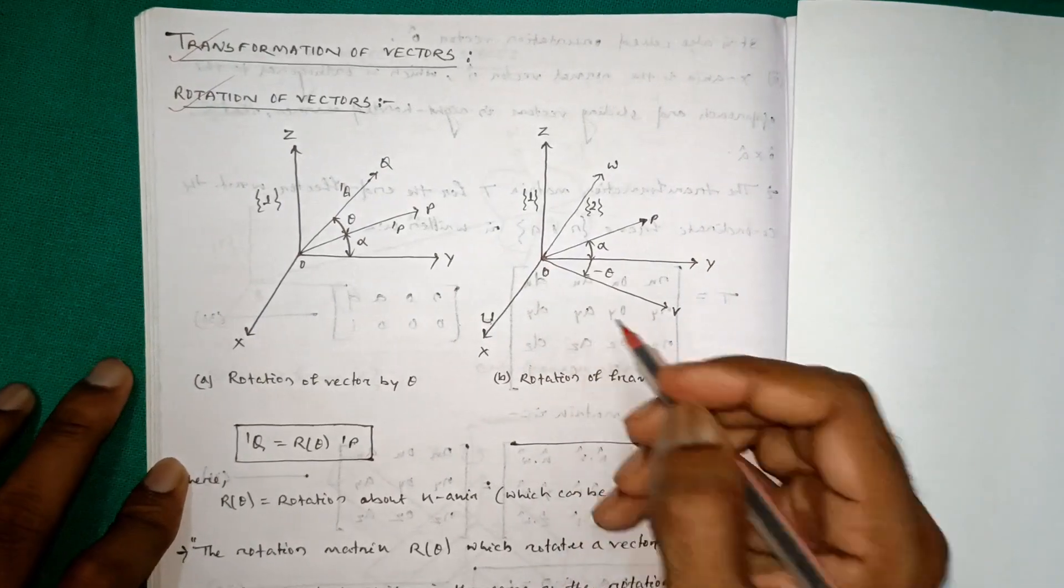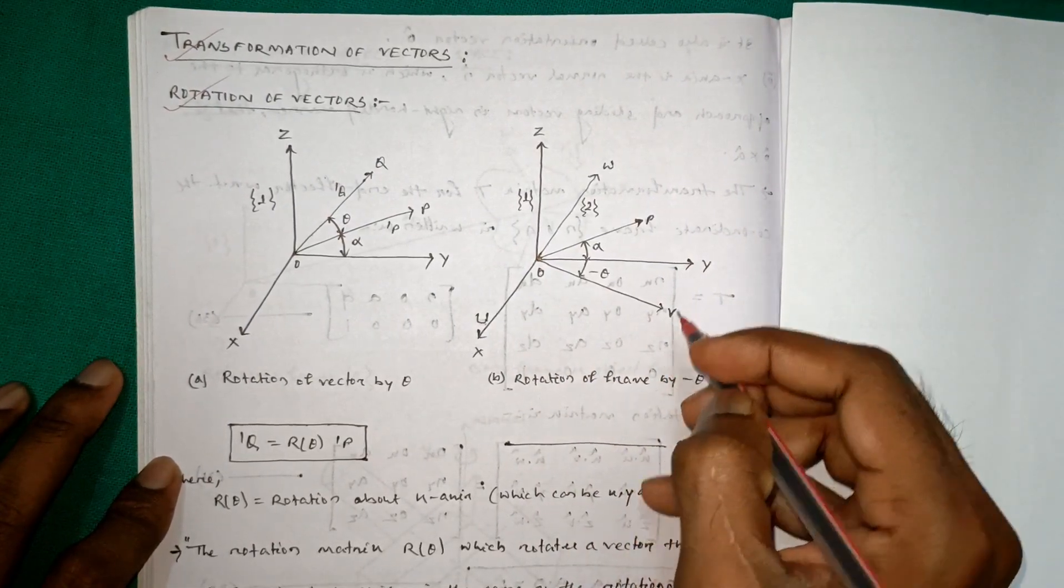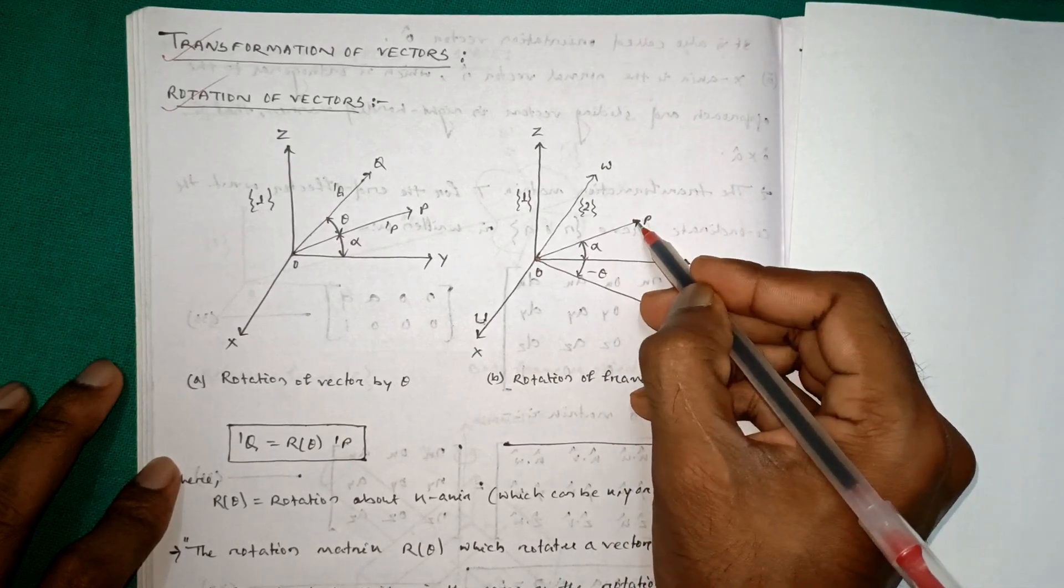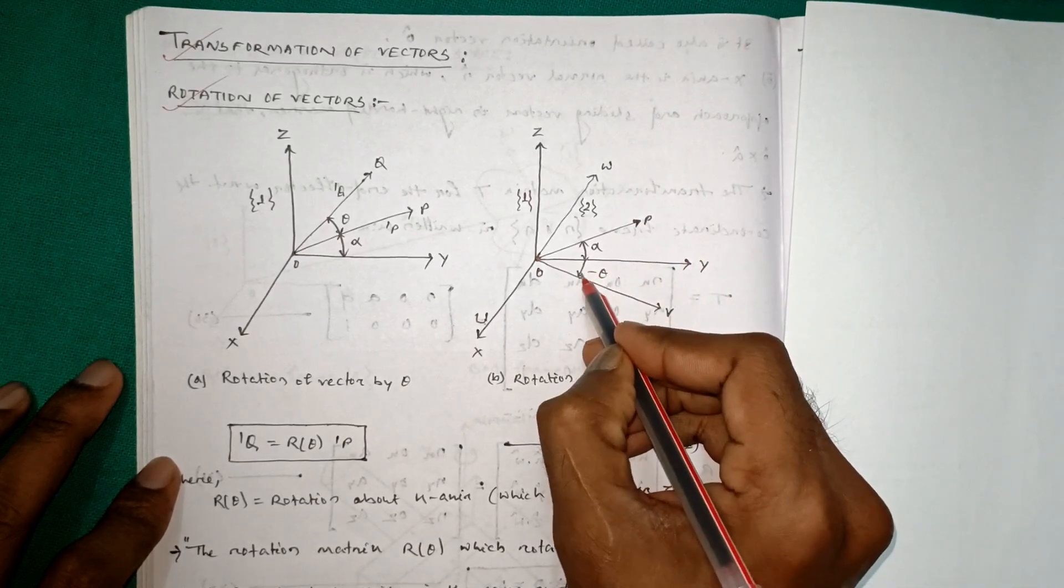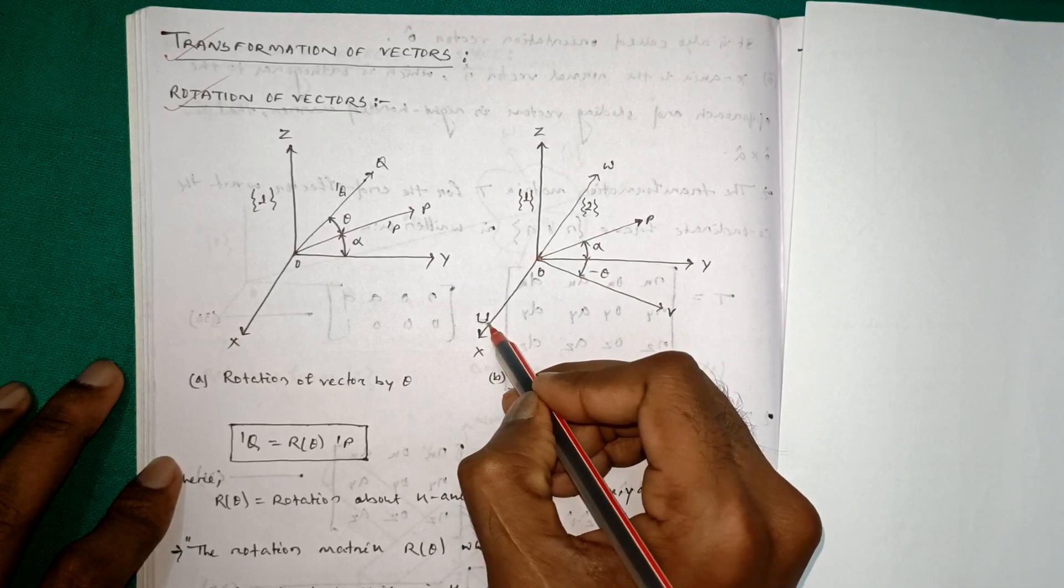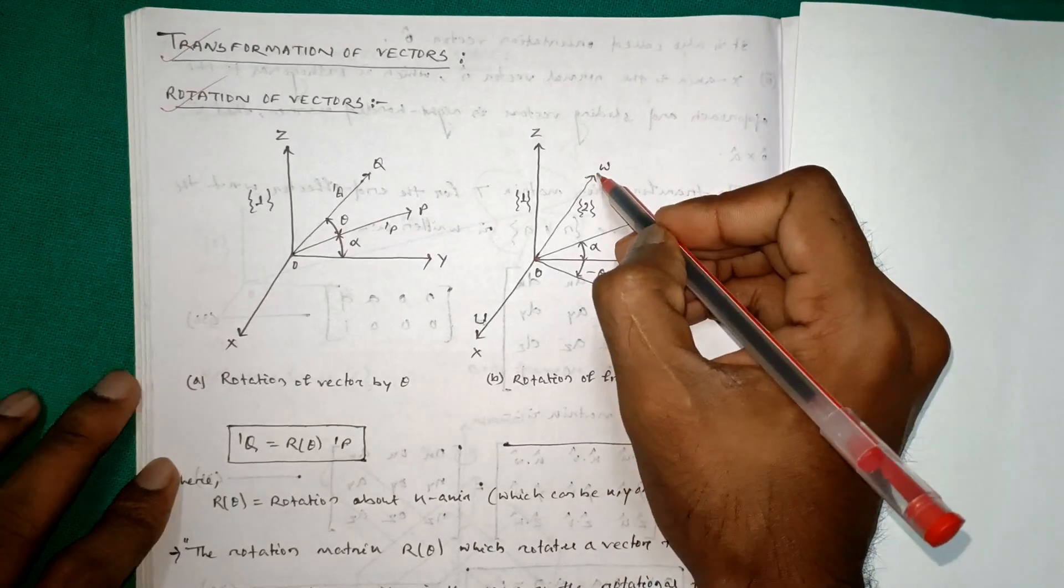Here we can see the rotation of frame by minus theta. That means this is P. We will get the new vector here and this angle is minus theta. The X axis is also U axis and this is V and this is W.